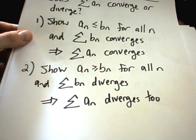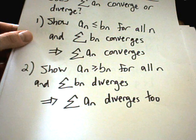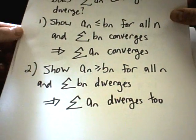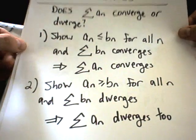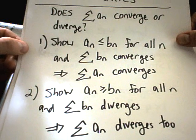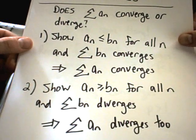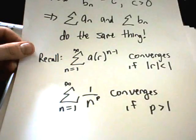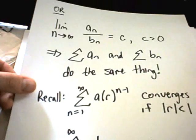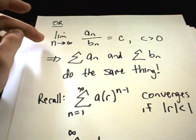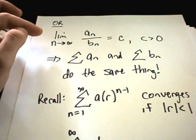This is what's known as the direct comparison test. Probably not my favorite one. I don't use it that often. Sometimes it's relatively straightforward, sometimes not so much. The other one is the limit comparison test, and this one's a good one. It's pretty straightforward.